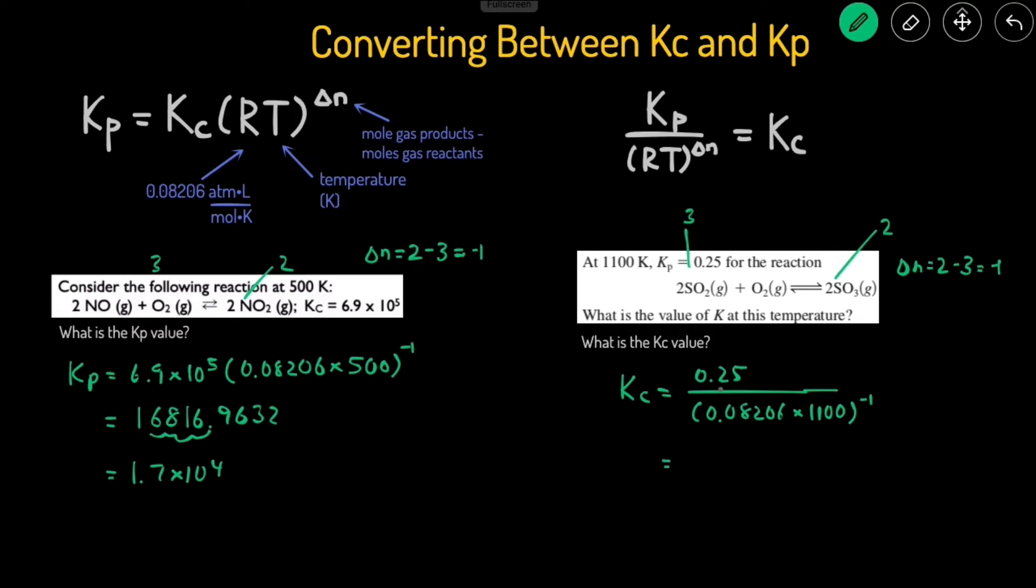So we'll have negative 1 here. Then plug this into your calculator. So that's just 0.25 divided by, make sure you put this inside parentheses, 0.08206 times 1,100, and close parentheses, and then raise that to negative 1. And you should get 22.5665, but rounding it to 2 sig figs, that would just be 23.